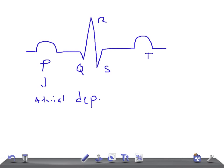The PR interval indicates the time from the start of atrial depolarization to the start of ventricular depolarization. So remember: PR interval = start of atrial depolarization to start of ventricular depolarization.